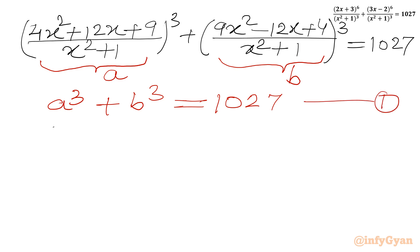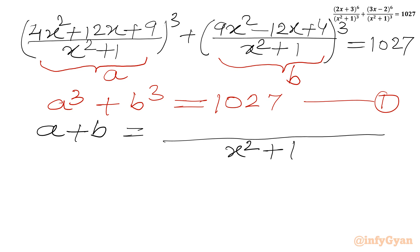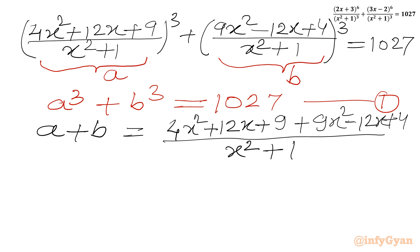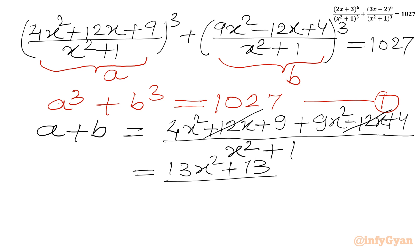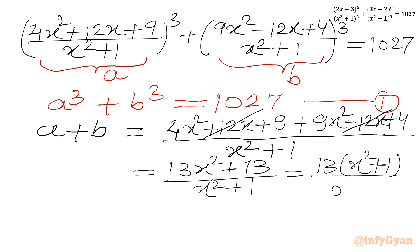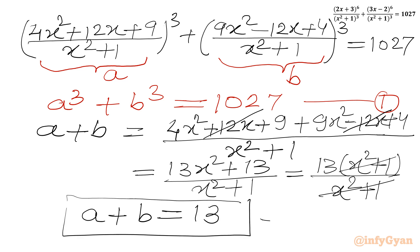Now I will find the value of a + b. We use the common denominator (x² + 1) and add the numerators: 4x² + 12x + 9 + 9x² - 12x + 4. We cancel the plus and minus 12x terms, giving us 13x² + 13 over x² + 1. Taking 13 common out: 13(x² + 1) / (x² + 1). Cancelling, we get our second equation: a + b = 13.